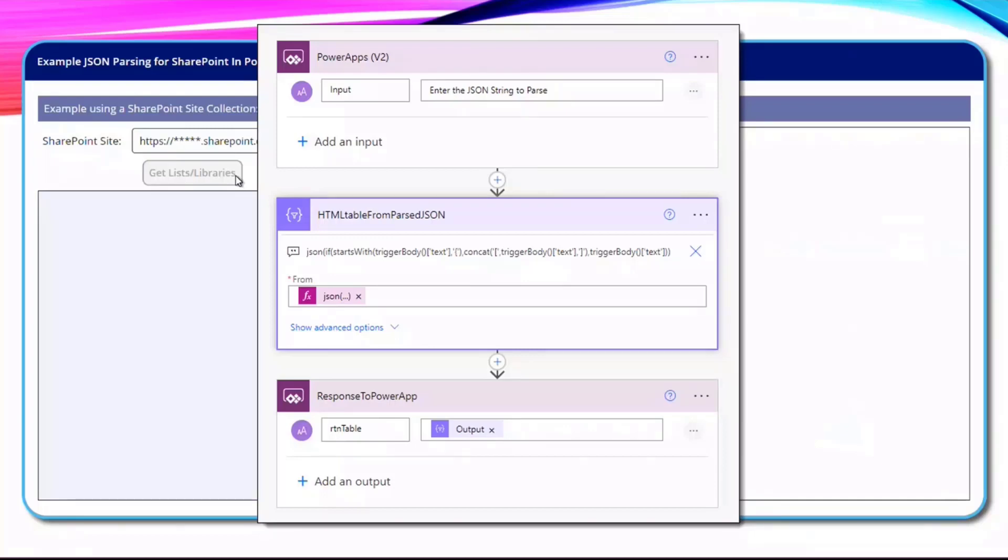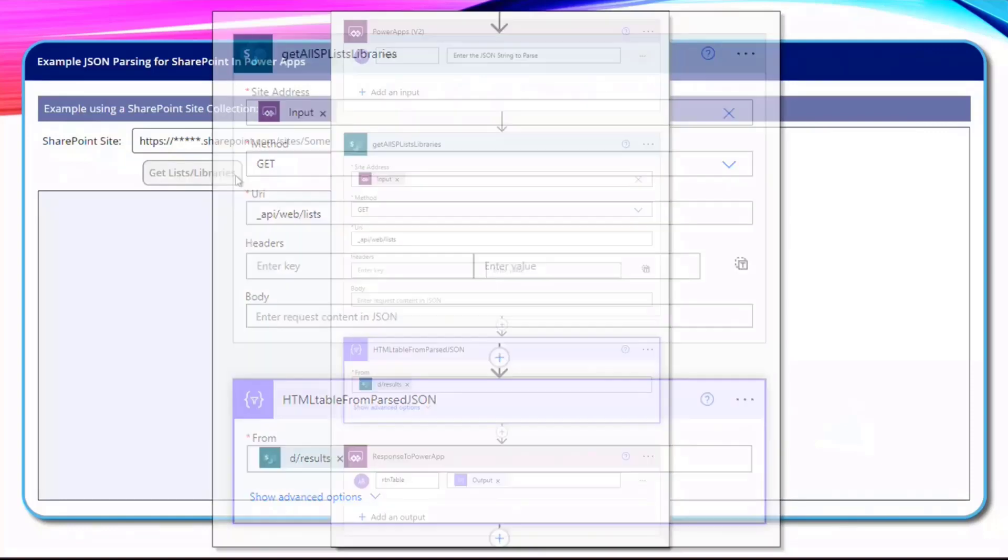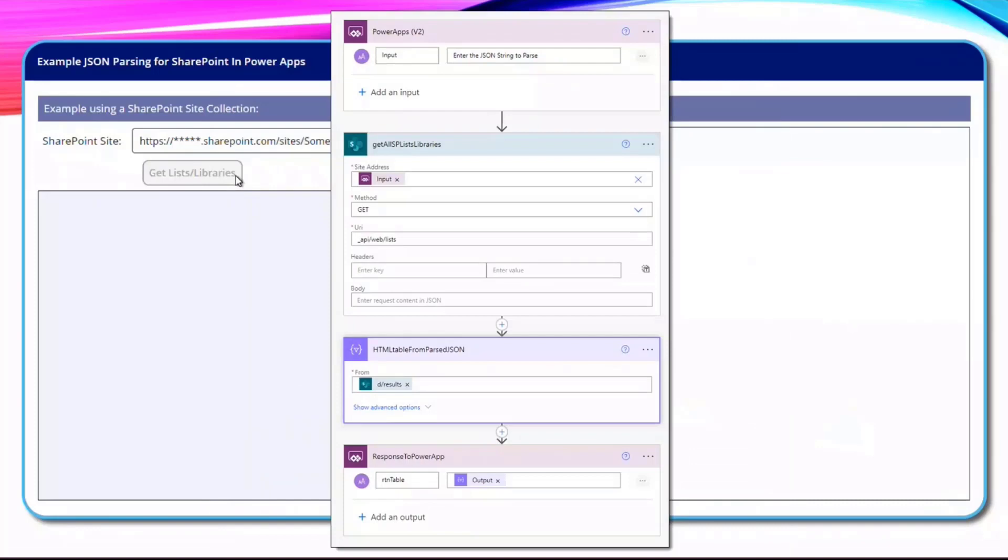That then goes in as the trigger, and instead of the flow that I just showed you here, I actually updated it so the input is the site address that I just put in the text box, and then I use that result to put into the HTML table and push back into Power Apps.